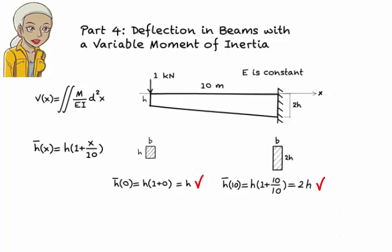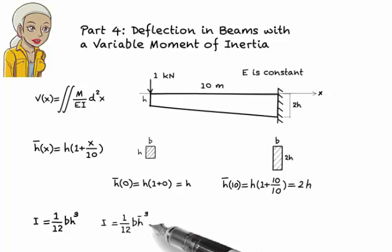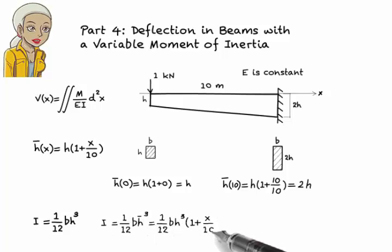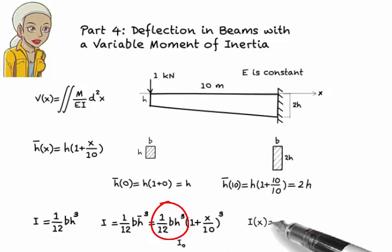For a rectangular section, moment of inertia about the axis of bending is 1 over 12 bh cubed. So for this beam, we get I equals 1 over 12 bh cubed times 1 plus x over 10 cubed. Let's refer to 1 over 12 bh cubed as I₀. Then I can write I(x) equals I₀ times 1 plus x over 10 cubed.